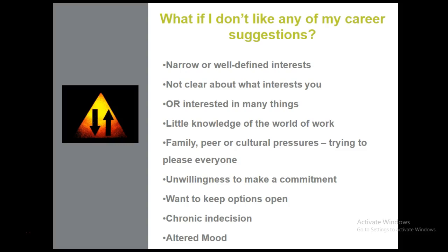He took the Holland inventory and it didn't show anything useful for him — he was trying to decide between two different types of engineering, like mechanical engineering and astrophysics. The Holland code is not going to pick that up because his interests were already really narrow. This assessment is really designed for someone who's undecided and just trying to get a sense of where they might fit if they're not clear about what interests them.